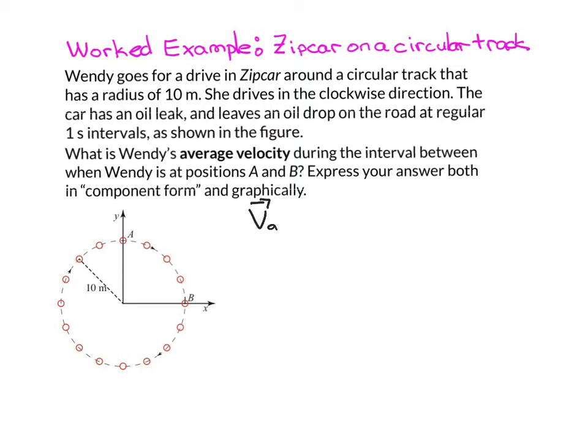Average velocity is a vector quantity. By definition, it's the ratio of the change in position or the displacement to the amount of time interval between when the motion starts and when it ends. We call that time interval delta T. So all we've got to do is evaluate both the numerator and the denominator.